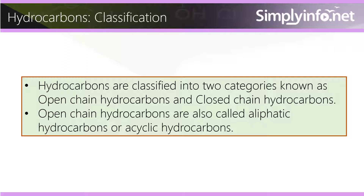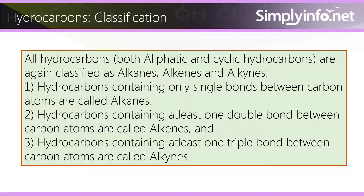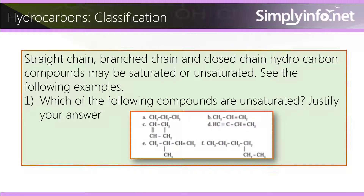All hydrocarbons, both aliphatic and cyclic, are again classified as alkanes, alkenes, and alkynes. Hydrocarbons containing only single bonds between carbon atoms are called alkanes. Hydrocarbons containing at least one double bond between carbon atoms are called alkenes, and hydrocarbons containing at least one triple bond between carbon atoms are called alkynes.